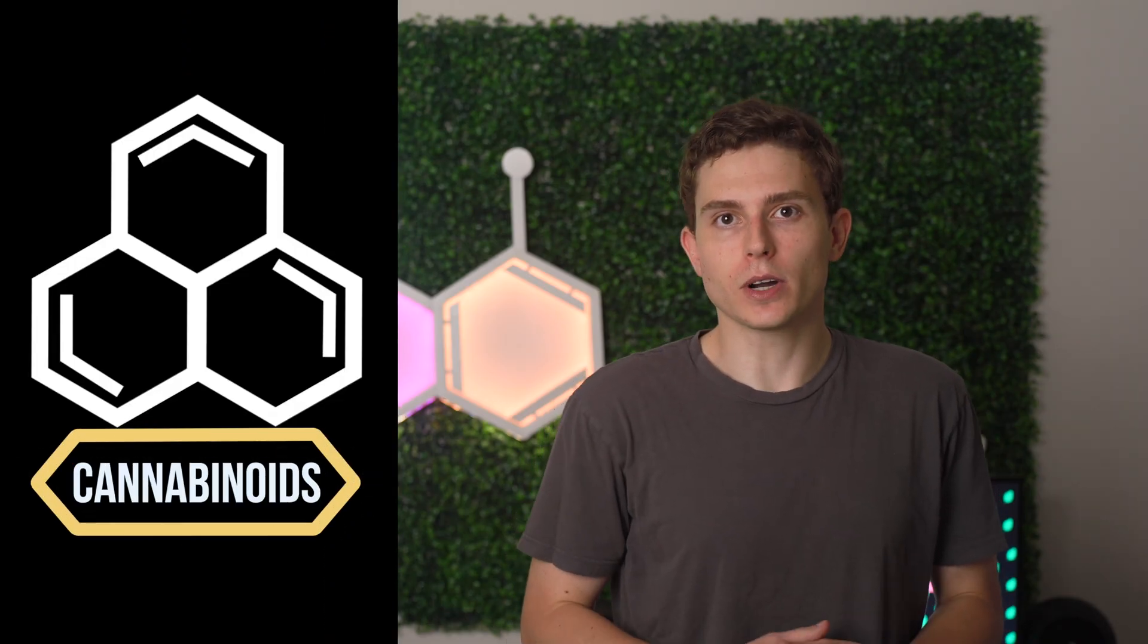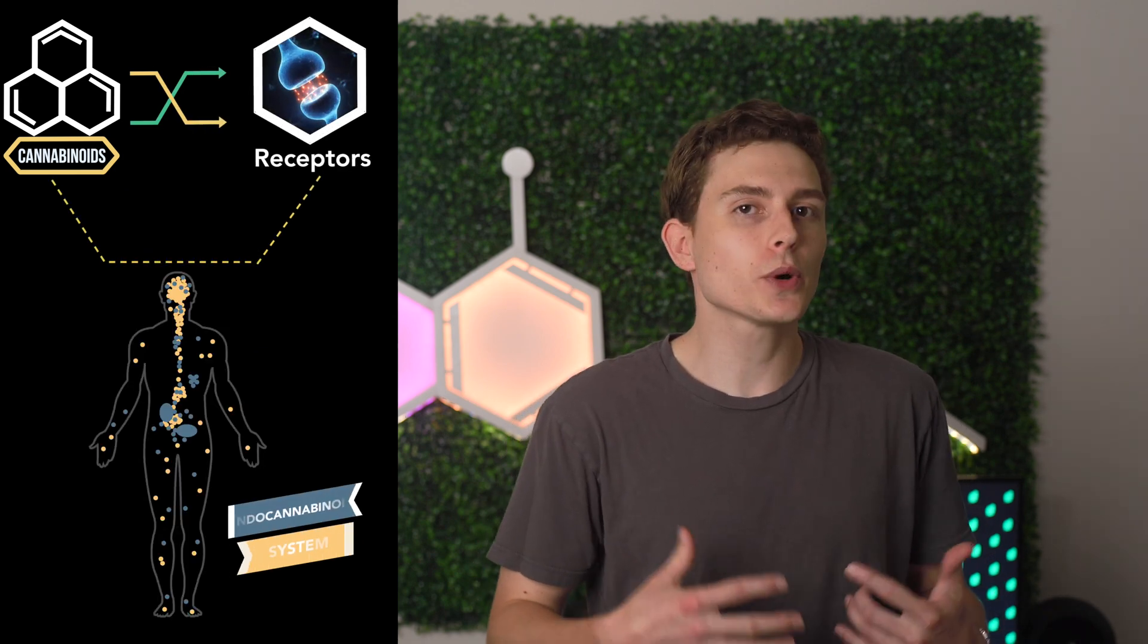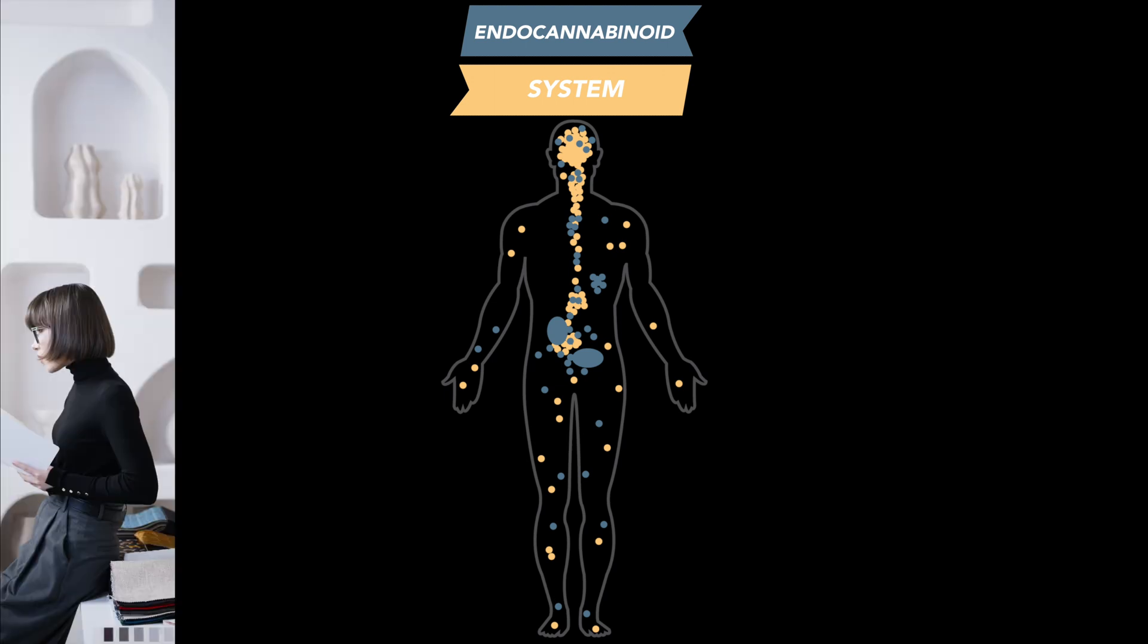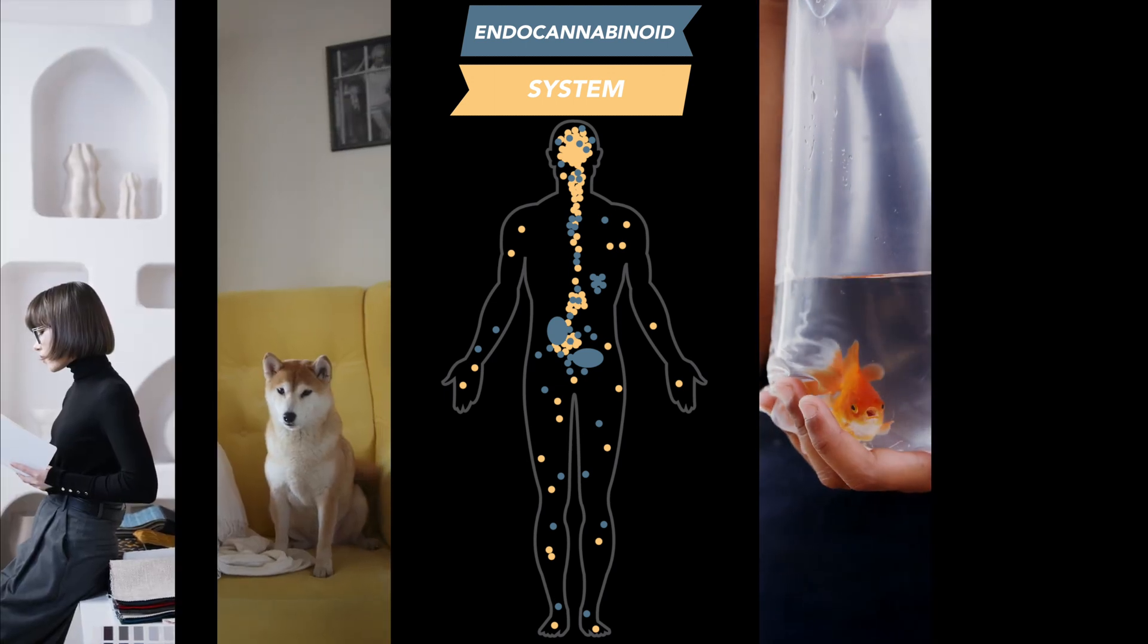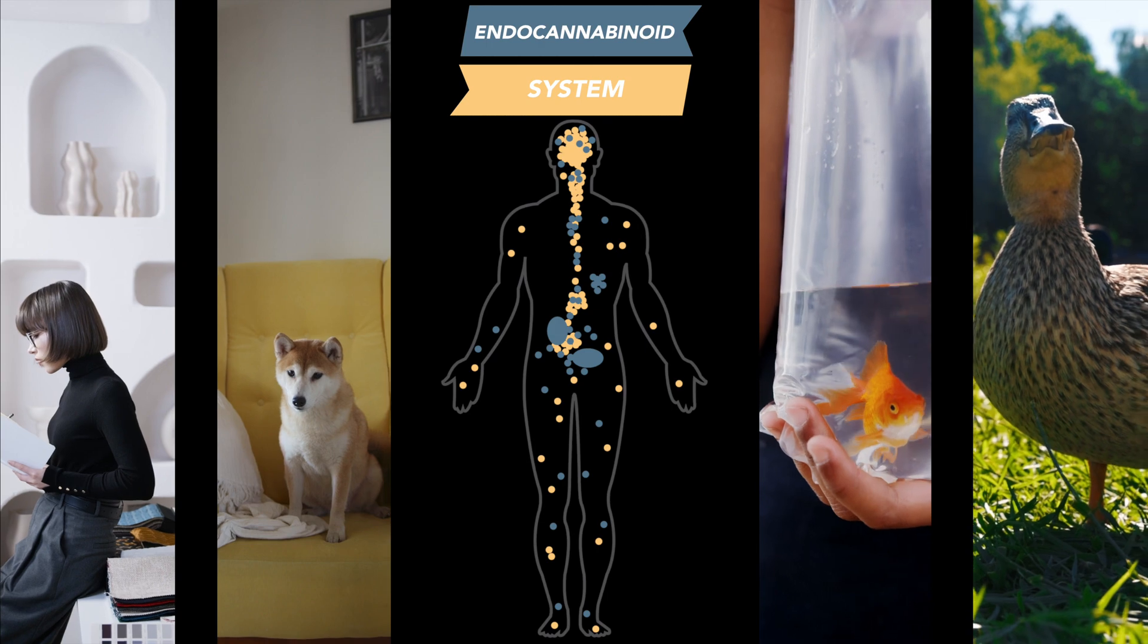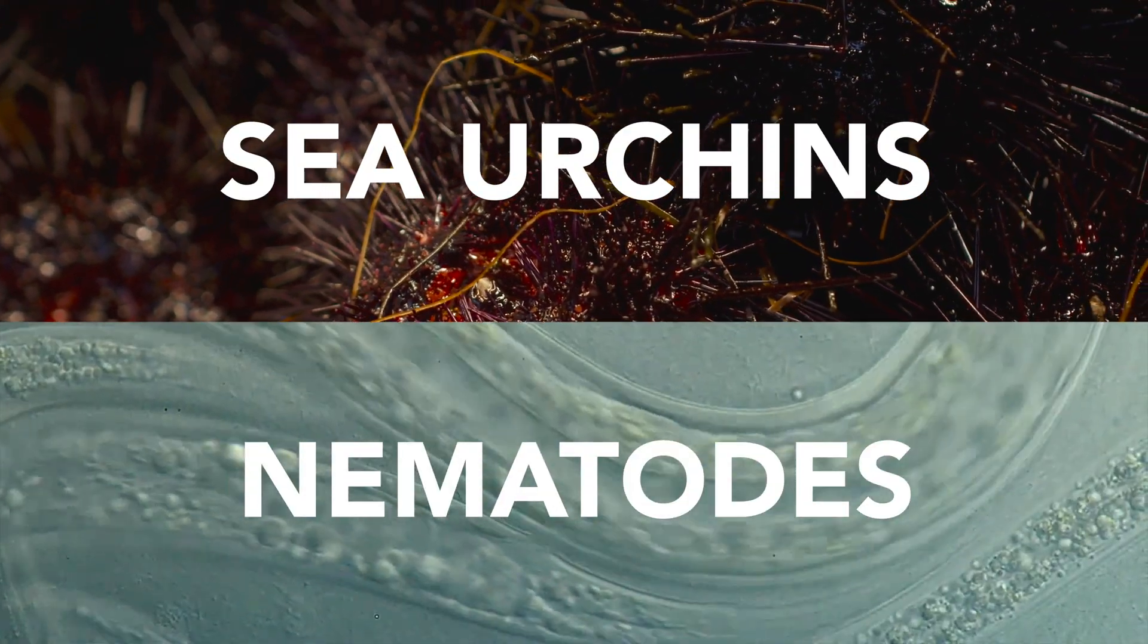Cannabinoids are a class of diverse chemical compounds that act on cannabinoid receptors located in what's called the endocannabinoid system. Now the endocannabinoid system, or ECS, is found in humans as well as mammals, fish, and even birds, and also some invertebrates such as sea urchins and nematodes.